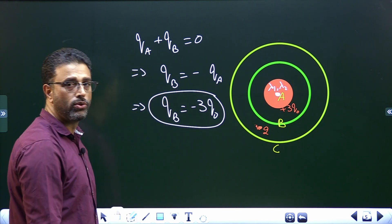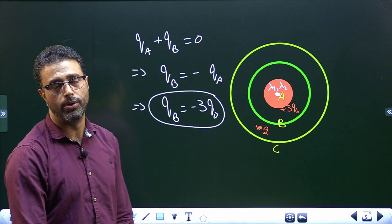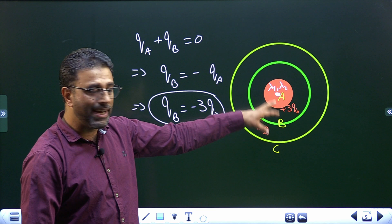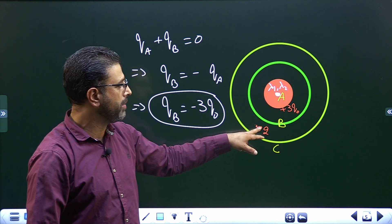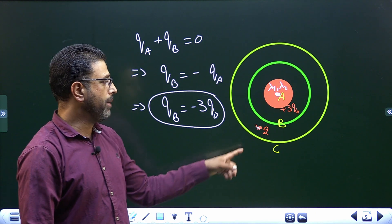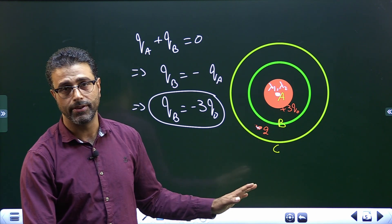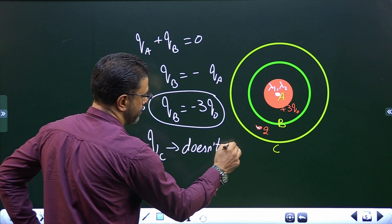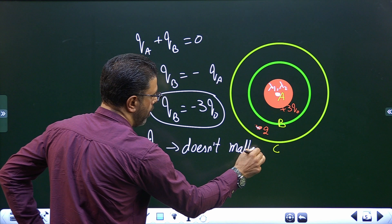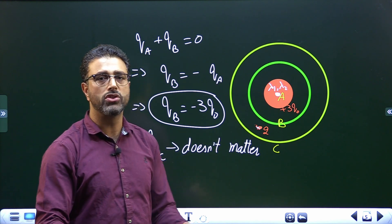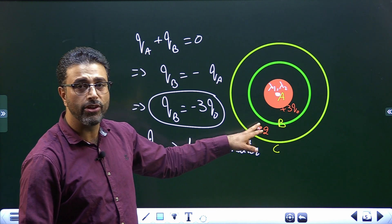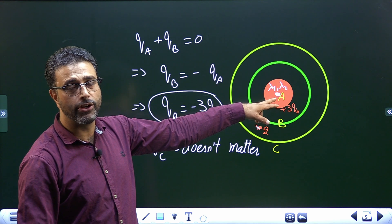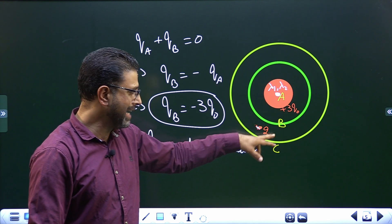So QB = −3Q₀. The charge on B should be negative and equal in magnitude to the charge on A. Only then will the field be zero at point 2. As for the charge on C, it doesn't matter — QC can be positive, negative, zero, or any non-zero value; it will play no role for the field at point 2. So QB = −3Q₀ and QC is indeterminate.